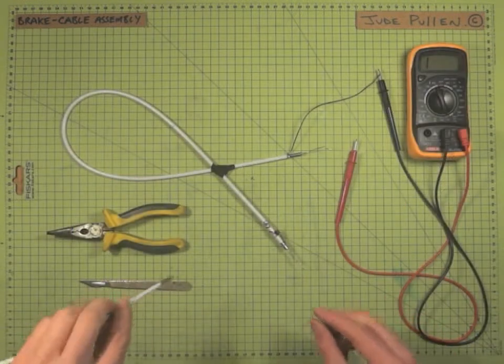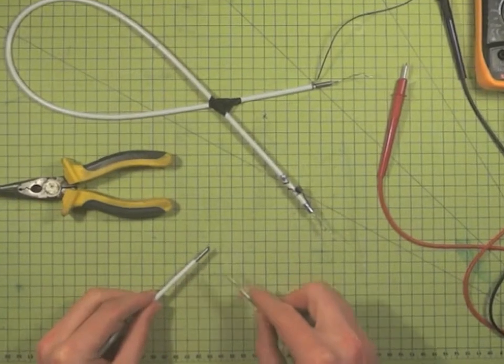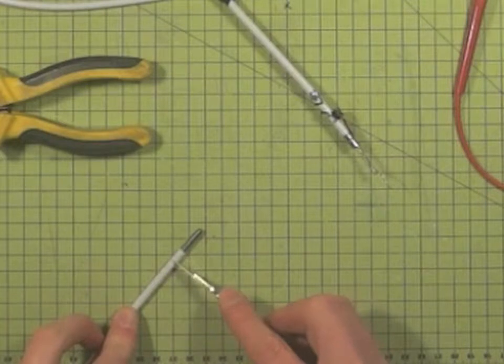But I thought I'd also show you how to remove the outer sheathing, which might be white or black or whatever color, from the brake cable. All you need to do is lie it flat on the table.